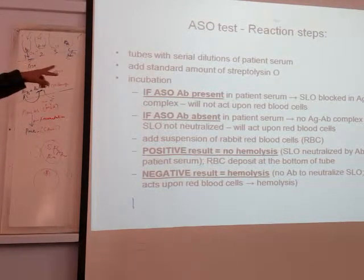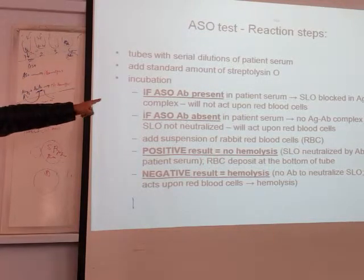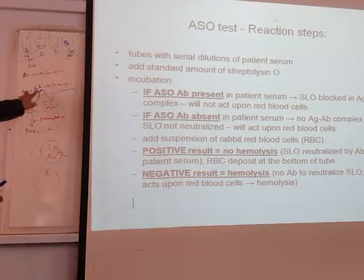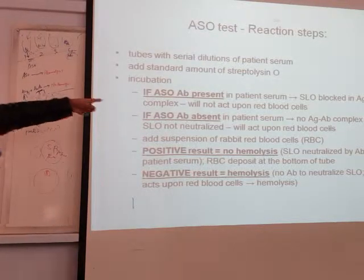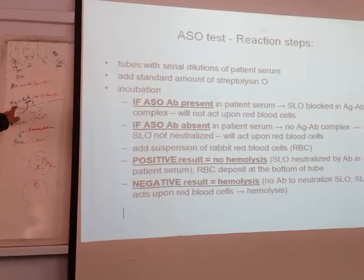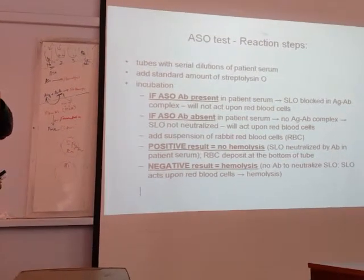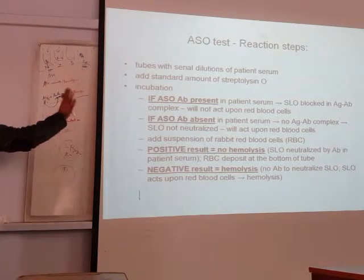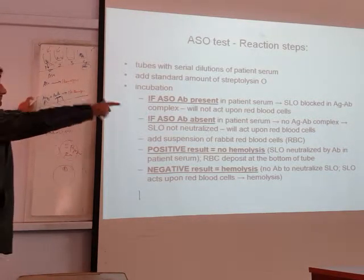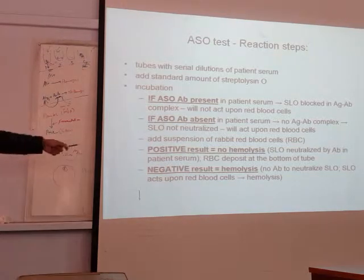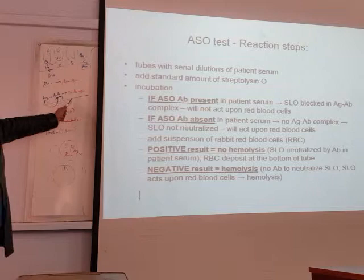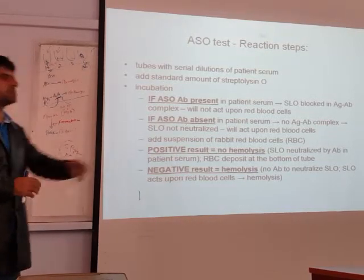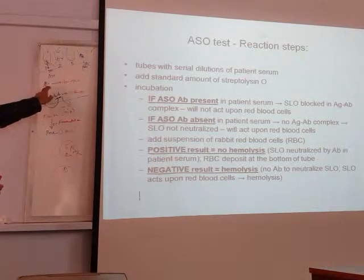The steps of the test: you make serial dilutions in tubes. If Anti-Streptolysin O antibody is present in the patient serum, the antigen and antibody block each other, and the O antigen will not act on the red blood cells. If the antibody is absent, there is no complex formation, no Anti-Streptolysin O antibody, and the antigen destroys the red blood cells. Positive test means no hemolysis. Negative test means hemolysis — the antigen is present but there is no antibody.